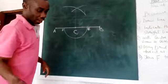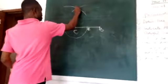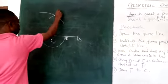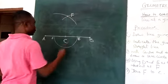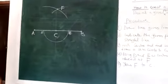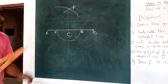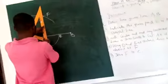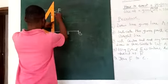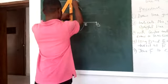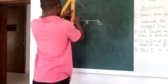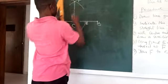Finally I am going to join them. This point of intersection is my point F. So finally I am going to join F to C. When I join F to C, that will give me the perpendicular bisector. That is it.